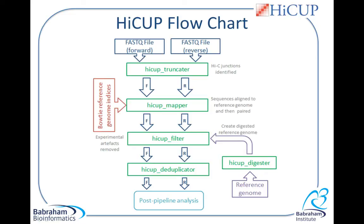The next step after truncation is mapping, which is performed by another script called HICCUP mapper. This is essentially a wrapper for Bowtie or Bowtie2 and maps the reads independently to a selected Bowtie reference genome. Independent mapping is important because this is Hi-C and unlike other paired-end sequencing protocols, one cannot assume that just because one read maps to one location of the genome, the other read should be in close proximity. After mapping comes filtering. This script removes many of the commonly encountered Hi-C artefacts, which may skew or cause you to misinterpret your data for subsequent analysis.